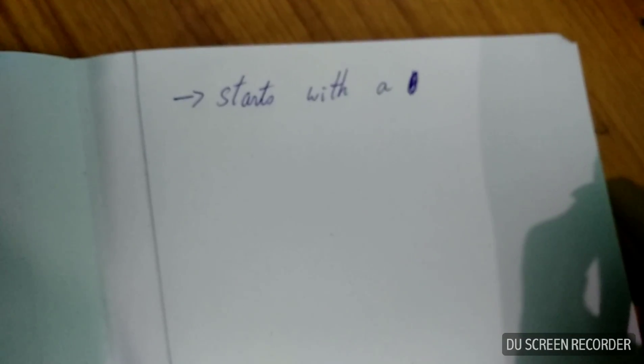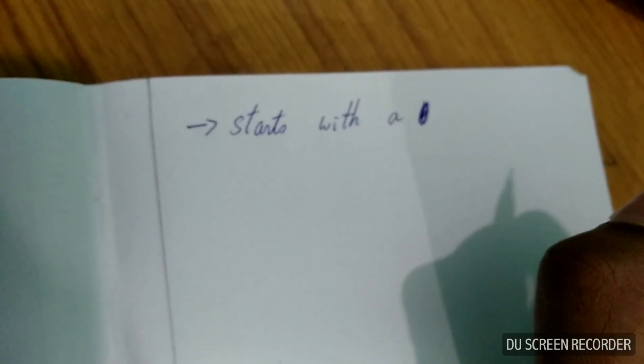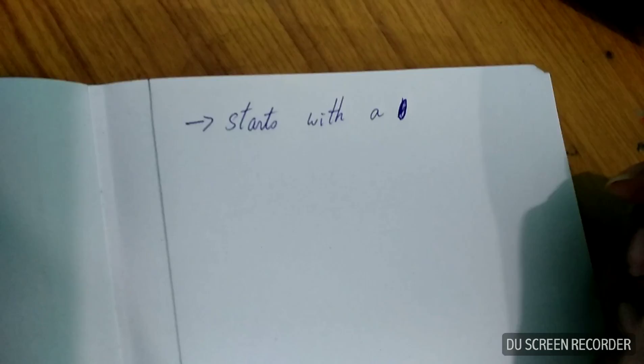Here we are going to make a DFA which is starting with A, which means it should only start with A. If it is not, it should be rejected.